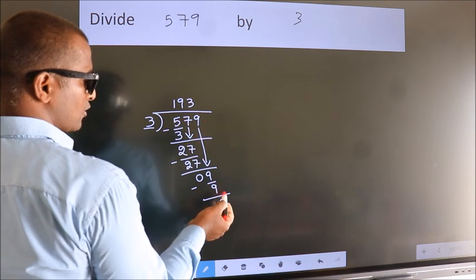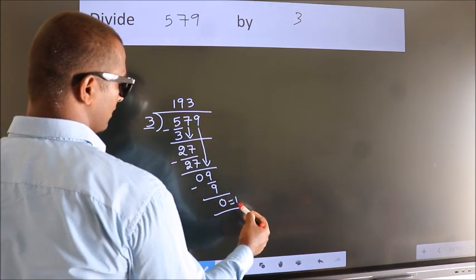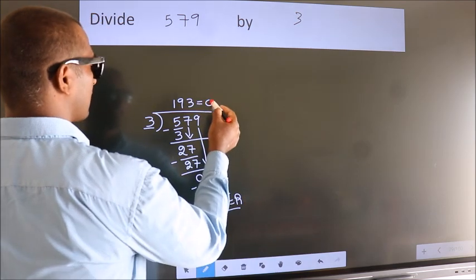No more numbers to bring it down. So, we stop here. This is our remainder. This is our quotient.